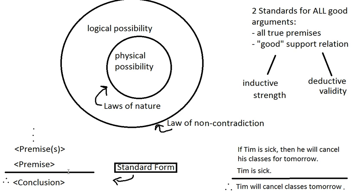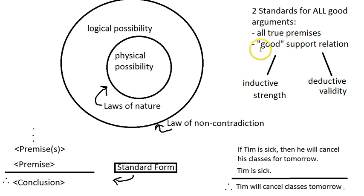Moving on to evaluating arguments — just as a way of anticipating things in a preliminary sort of way — the entire class could be summarized in two standards. No matter what type of argument we've got, no matter the subject matter, all good arguments require only two things: they need to have all true premises, and they need to have a good support relation. I put 'good' in scare quotes because there's some ambiguity about what standard we're going to hold support relations to.